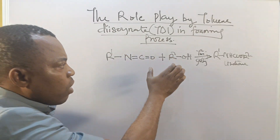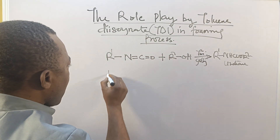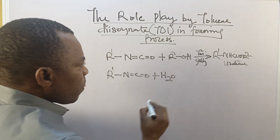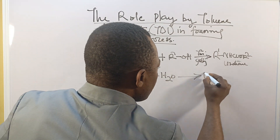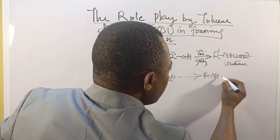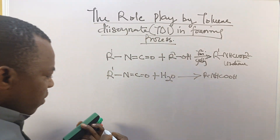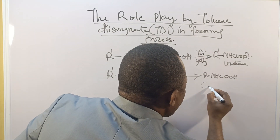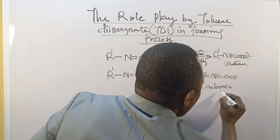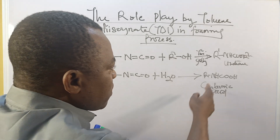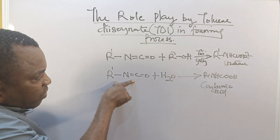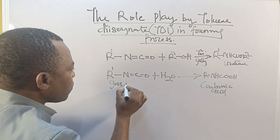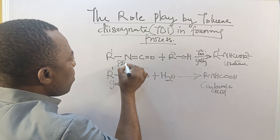The carbon bonded to the electronegative element is being pulled out, making this carbon lose electrons, thereby increasing the rate at which the urethane is formed — that is consumption one. Consumption two is TDI reacting with water. In this case, what is going to form is R-N=C=O reacting with water, forming a carbamic acid (RNHCOOH).